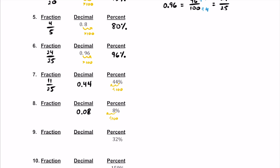We can read that as 8 hundredths. So if this is 8 hundredths, then as a fraction we can write it as 8 over 100. We can divide by 4 and 4, which is their GCF. If we do that, then we get a simplified fraction of 2 over 25. So that will be the most simplified fraction here.